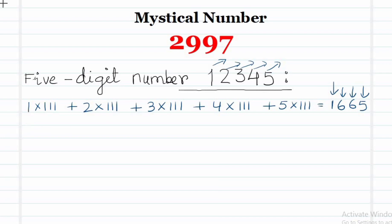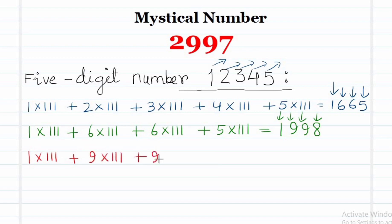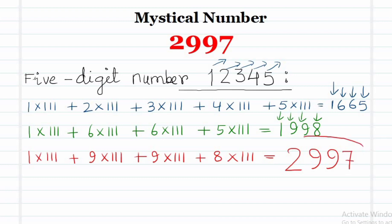If we repeat the same procedure on 1665 — 1 into 111 plus 6 into 111 plus 6 into 111 plus 5 into 111 — we get 1998. The digits of 1998 are 1, 9, 9, and 8. Finally, multiplying each digit by 111 and adding — 1 into 111 plus 9 into 111 twice plus 8 into 111 — we get 2997. Only 3 steps are required to reach 2997.